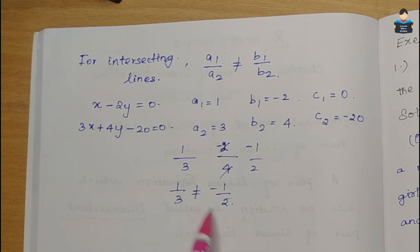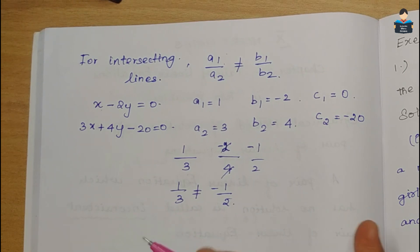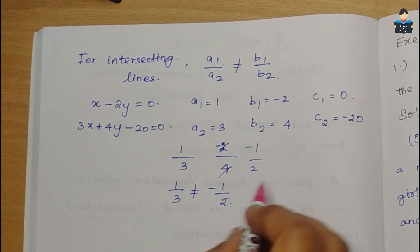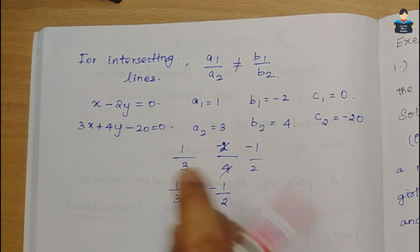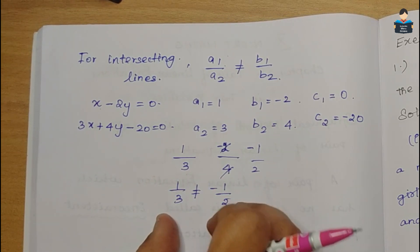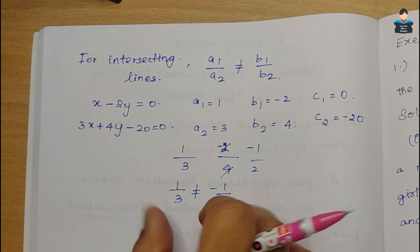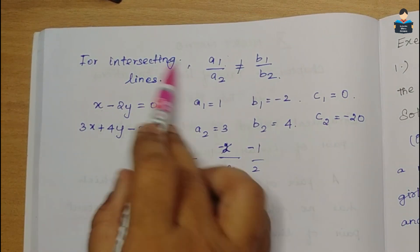The left-hand side and right-hand side are not equal - it is not equal. So the condition for intersecting lines is satisfied. Therefore these two equations represent intersecting lines.